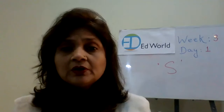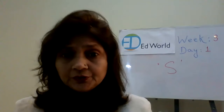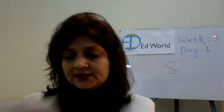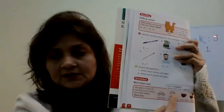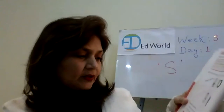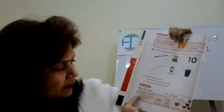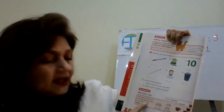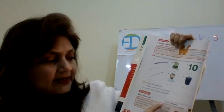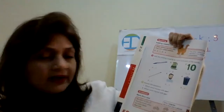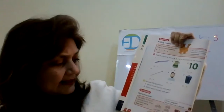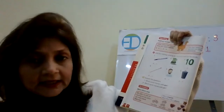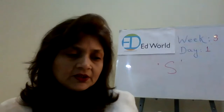Now, if you open your Nensil English to page number 16, this part tells you about singular — that we add S to lots of naming words when we mean more than one. One is singular and more than one is plural. Like here, they have shown one bike, two bikes; one cup, three cups.